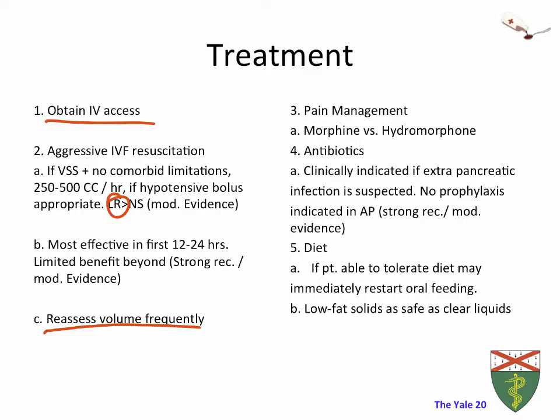Pain management is important in acute pancreatitis — morphine or hydromorphone (Dilaudid) are appropriate. Old lore about sphincter of Oddi dysfunction associated with morphine has never been shown in the literature. Regarding antibiotics: if you clinically suspect an infectious process on top of acute pancreatitis, antibiotics are appropriate; however, prophylactic antibiotics have no evidence of benefit and should not be started preemptively. Regarding diet: the old adage of pancreatic rest is out of favor. If the patient can eat, start them on a diet. Data suggests a low-fat solid diet is just as good as clear liquids and is more palatable.